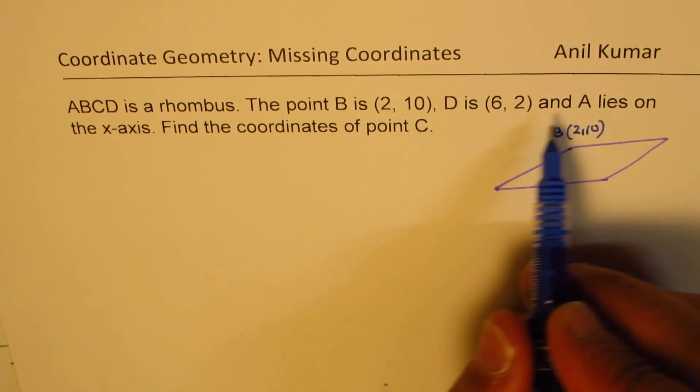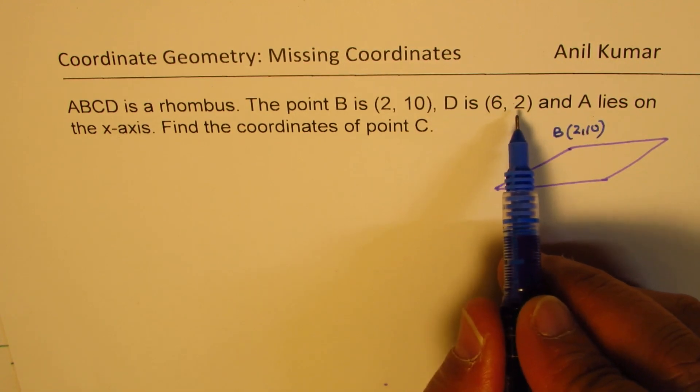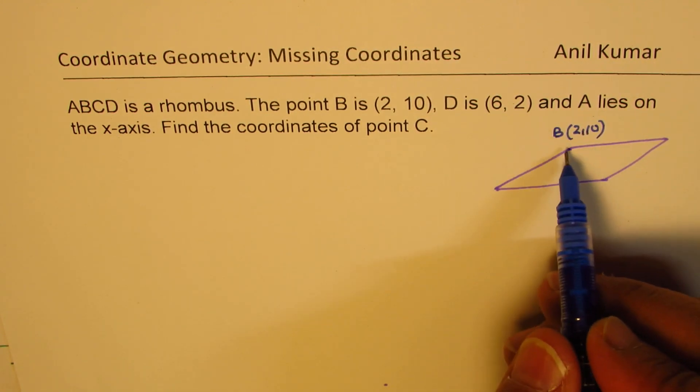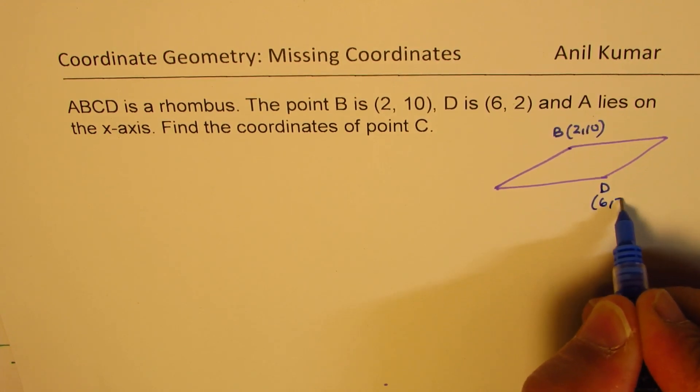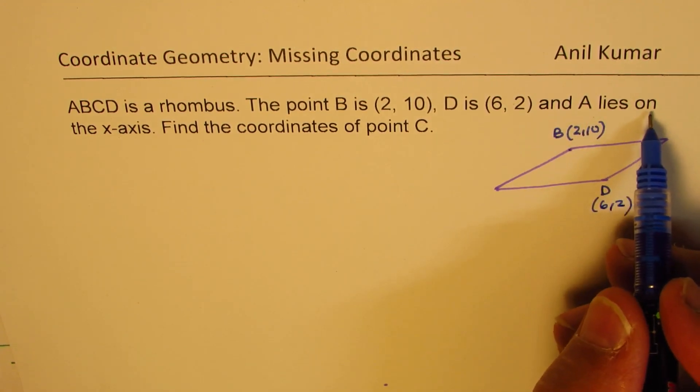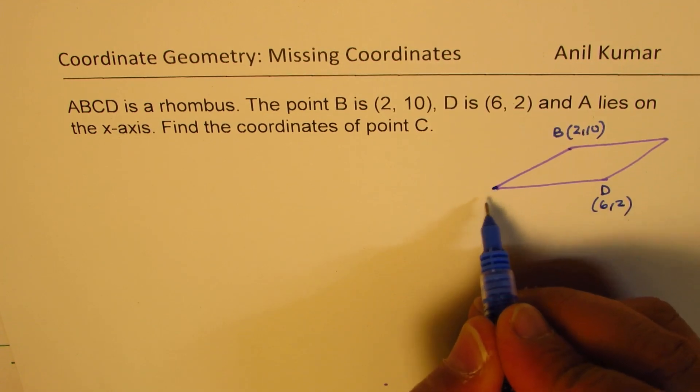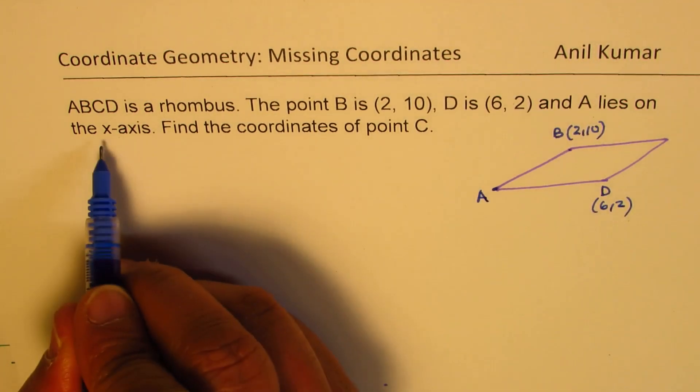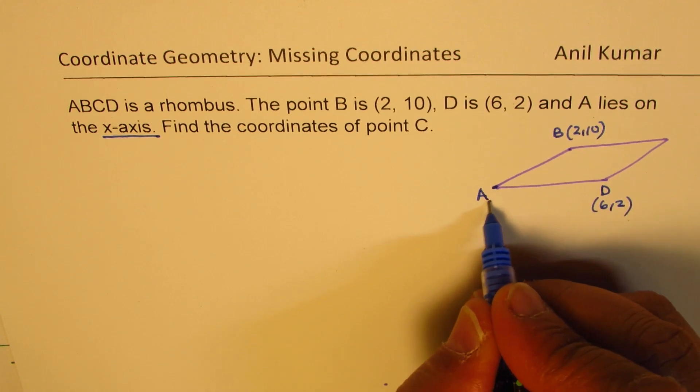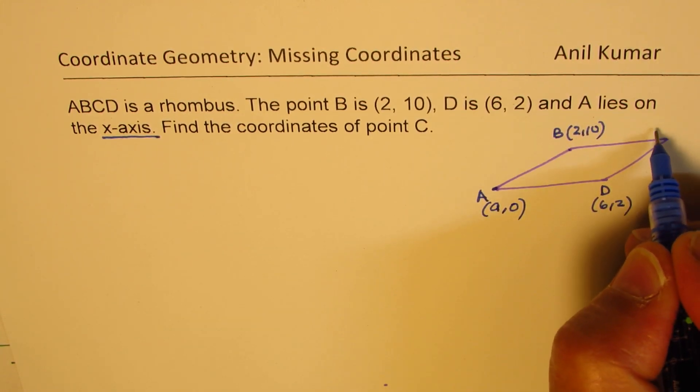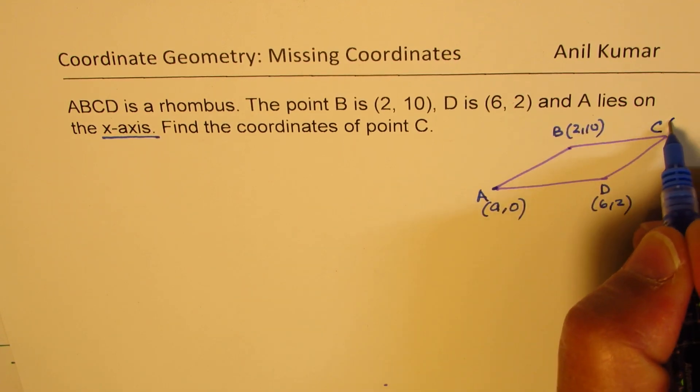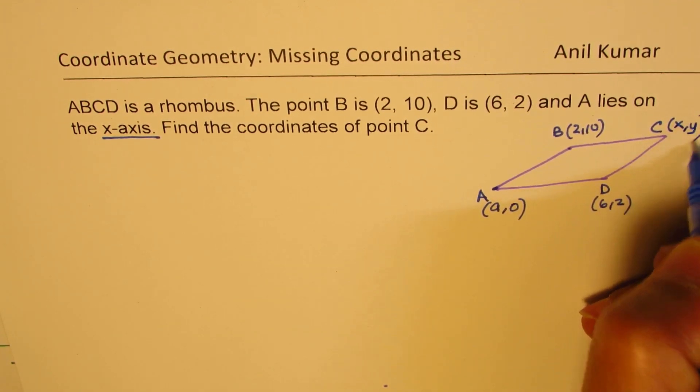D is (6,2), so D is opposite to it, which is (6,2). A is on the x-axis, so let's take this as A. On the x-axis means y-coordinate is 0, so let me call this (A,0). And then we have a point C here: A, B, C, D. Let's call this (x,y).